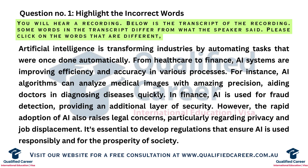Artificial intelligence is transforming industries by automating tasks that were once done manually. From healthcare to finance, AI systems are improving efficiency and accuracy in various processes. For instance, AI algorithms can analyze medical images with remarkable precision, aiding doctors in diagnosing diseases earlier.